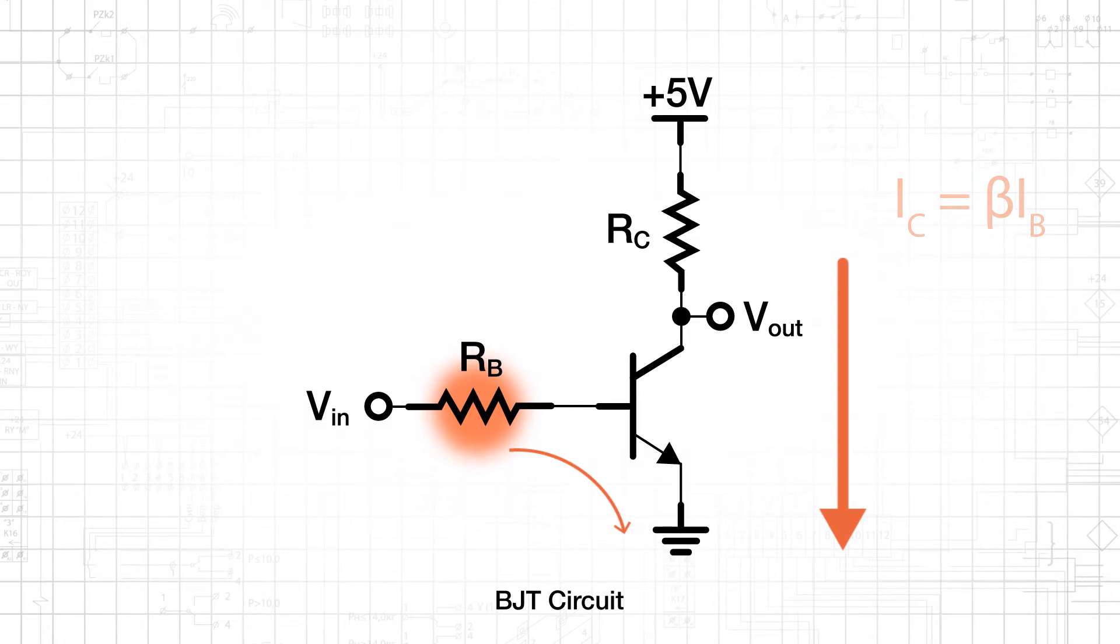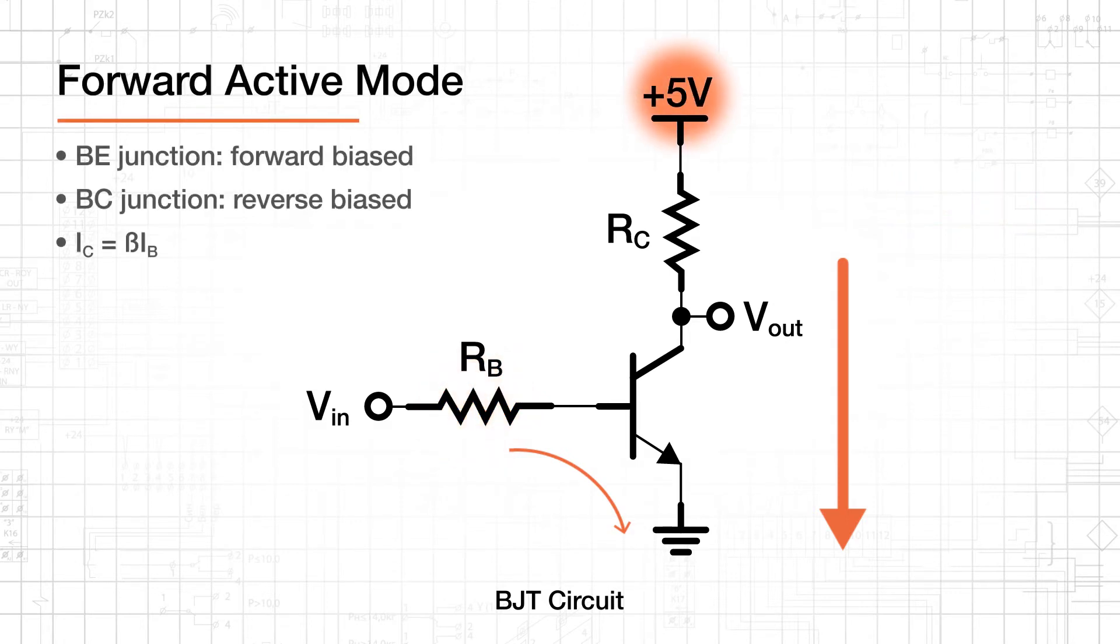The BJT is in forward active mode because the supply voltage connected to the collector through RC is much higher than Vin, and this ensures that the base to collector junction, or BC junction, is reverse biased.